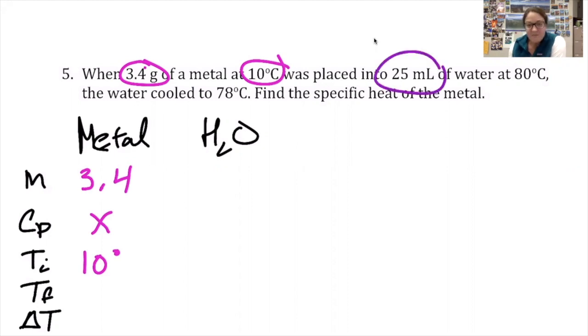For the water, 25 milliliters of water. One milliliter of water is one gram of water. I know water to have a specific heat of 4.18, and it's starting at 80 degrees.